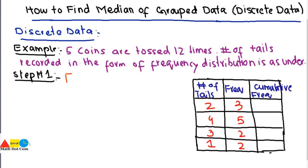Step number one is find cumulative frequency. Let's find the cumulative frequency first. In the first observation, we have the cumulative frequency as 3, as there is no frequency before that.